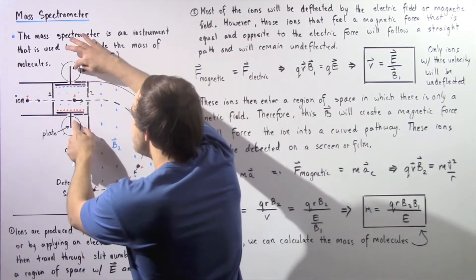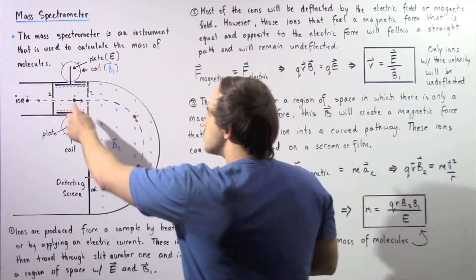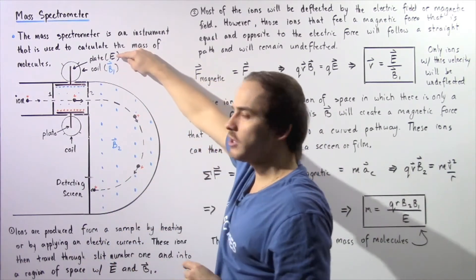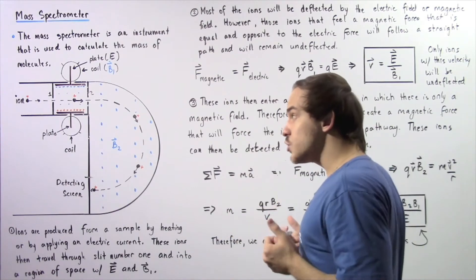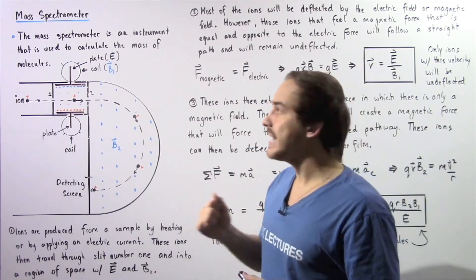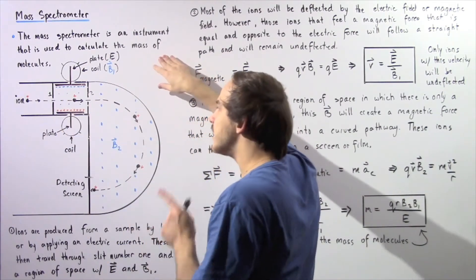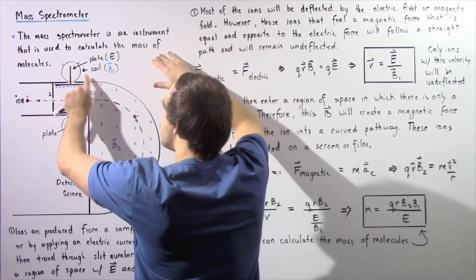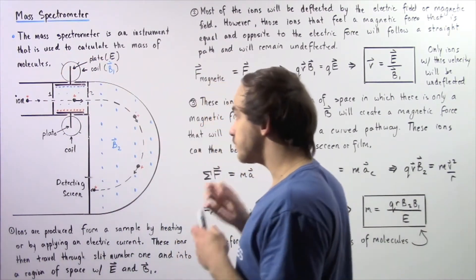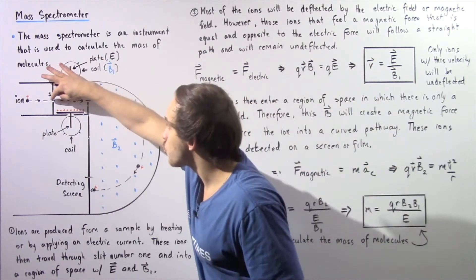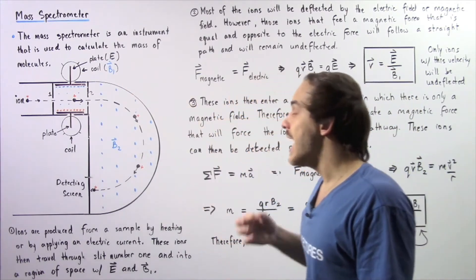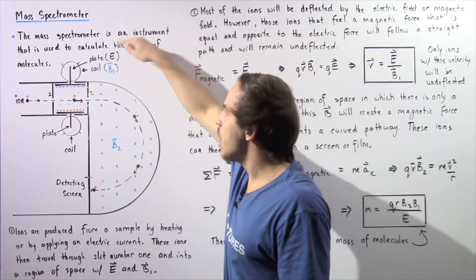We have a pair of parallel plates — a negatively charged plate and a positively charged plate. This separation of electric charge produces an electric field E. At the same time, two coils of wire carry an electric current that produces a magnetic field B1 in this region. Our electric field begins on the positive end and ends on the negative end, while magnetic field B1 points out of the page as shown by the blue dots. When those ions travel through this region, they will feel two forces: a magnetic force and an electric force.